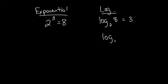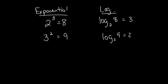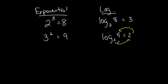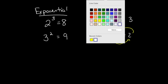If I start with log base 3 of 9 is equal to 2, and I want to go into exponential form, there are two ways to do this. The base of the log is 3, so the base of the exponential is also going to be 3. A log is always equal to an exponent, so the exponent is 2, and that equals 9. That's a true statement — 3 squared is 9. Sometimes people do this 'around the world' thing: you start at the base of the exponential, raise it to the exponent, and set it equal to the other side. So 3 raised to the 2 is equal to 9 — that's converting from logarithmic form to exponential form.